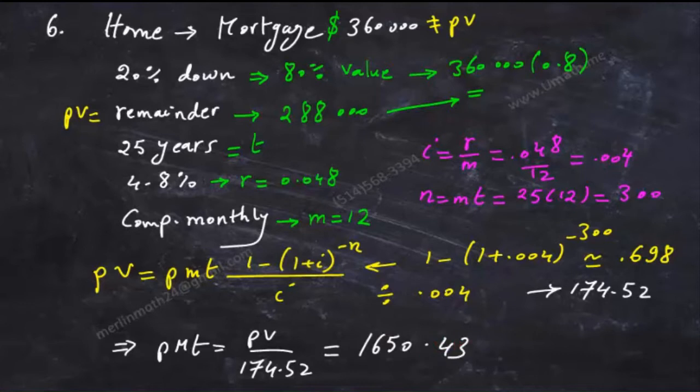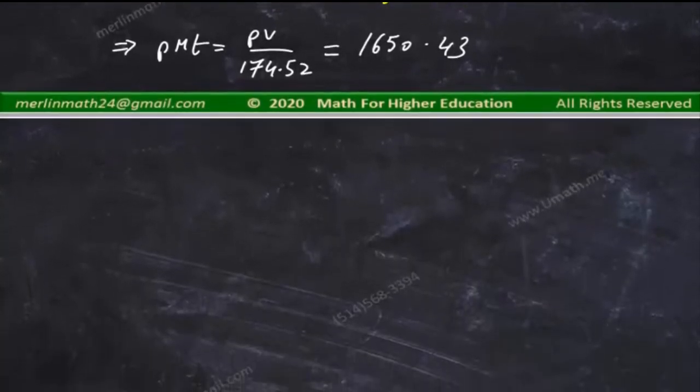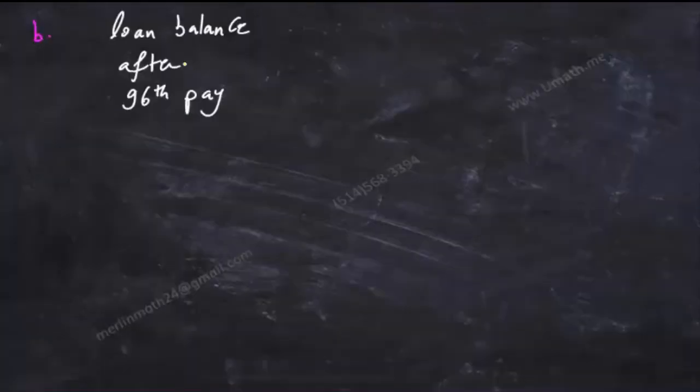Now in part b, what will be the approximate balance after the 96th payment? The loan balance is the unpaid which is the pv, but for sure the factor right here changes.